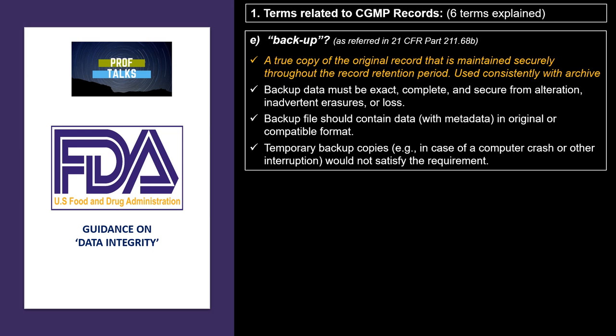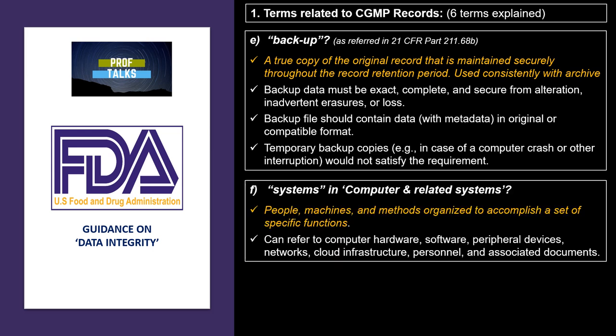The next term is backup. Backup and archival are two different terminologies. Archival is the storage requirement of an original record for the retention period, while backup is mainly for disaster recovery. The storage requirements for both archival and backup are the same. Backup must be exact, complete, and secure from alteration. Metadata should be stored as a form of backup along with the original data. The next term is systems. A system means people, machines, and methods organized to accomplish a set of specific functions. It can refer to computer hardware, software, peripheral networks, cloud infrastructure, personnel, and associated documents.